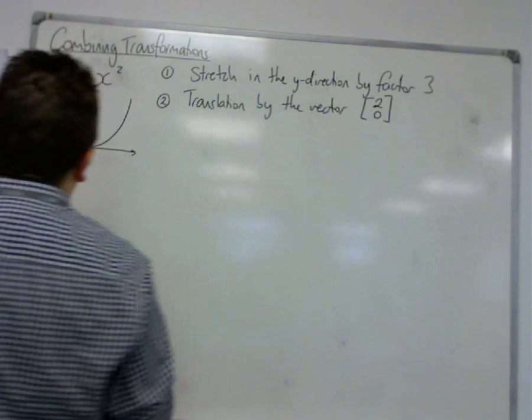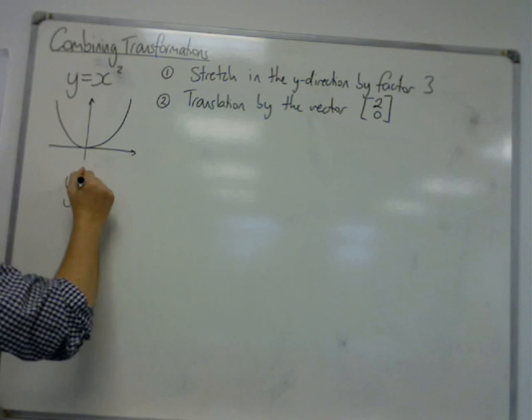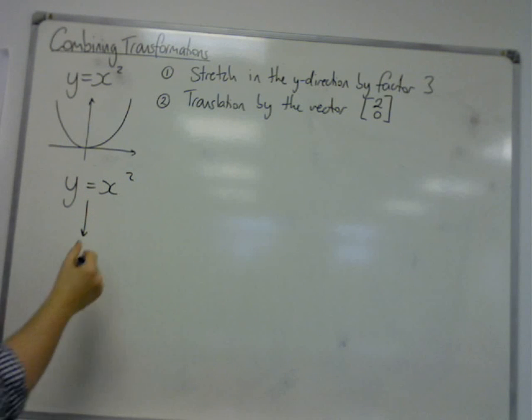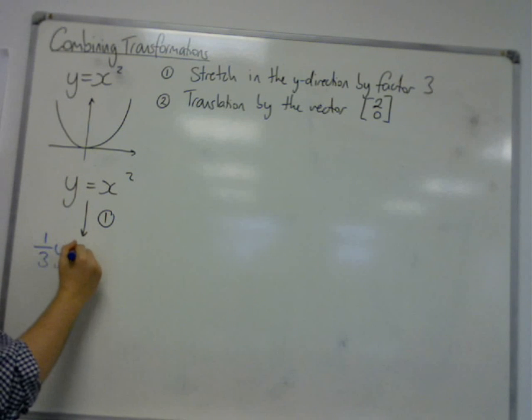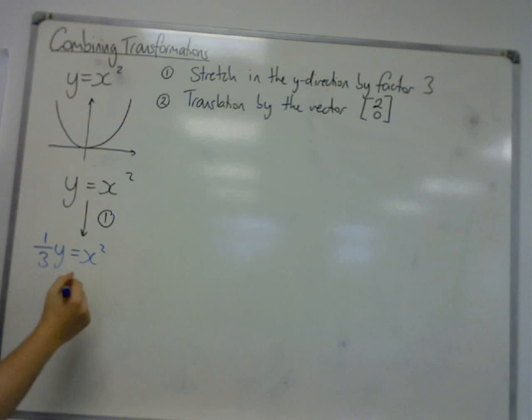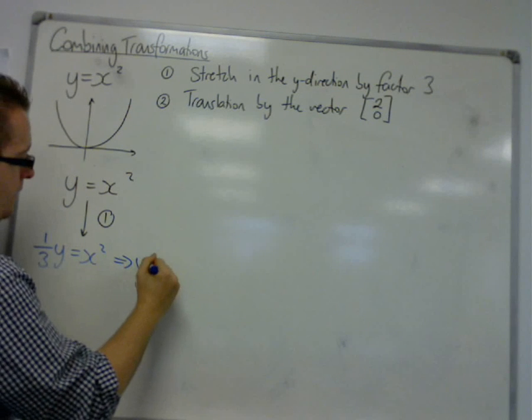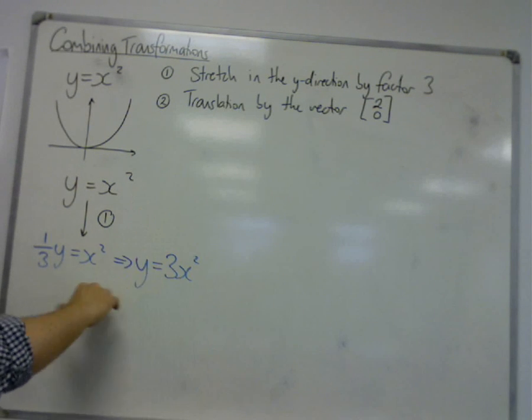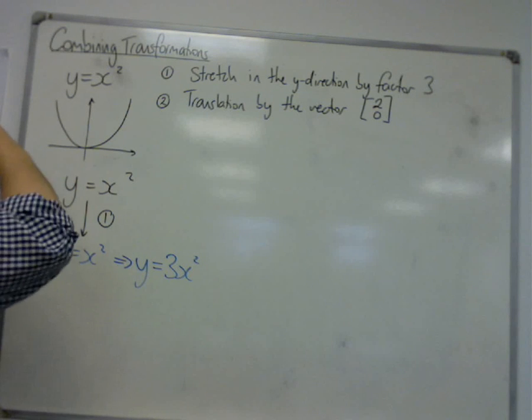So if we start off with y equals x squared, then we have the stretch in the y direction by a factor of 3. So y gets replaced with 1 third y. So we can write that y equals 3x squared. So that's stretched the graph in the y direction by a factor of 3.